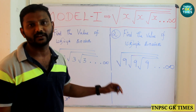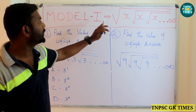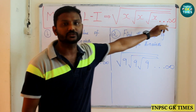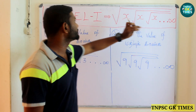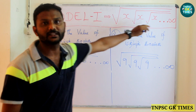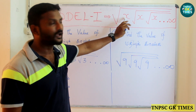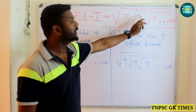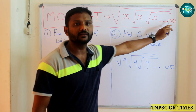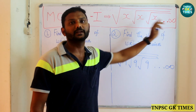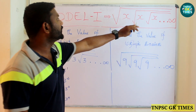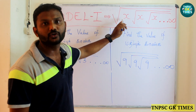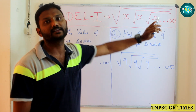Now, we are going to talk about the first model, Model 1. This is a formula and this is a condition. That is the square root of x, square root of x, square root of x, up to infinity. The answer is: what is the value of the square root? That itself is the answer.